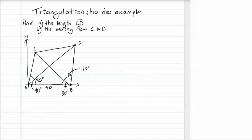This one needs several steps. We have a situation with four points, A, B, C and D, and we've been asked to find the length CD as well as the bearing from C to D. This is one of those questions where we can't find either of those immediately. We'll have to take several steps.